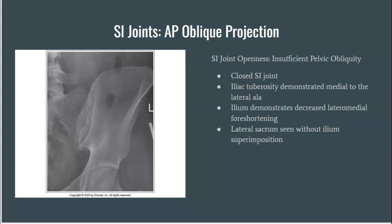The iliac tuberosity will be demonstrated medial to the lateral wing. The ilium will demonstrate decreased lateral-medial foreshortening, and the lateral sacrum will be seen without ilium superimposition. When looking at this image, the SI joint is definitely closed and there is some foreshortening, so keep this in mind as we get to our practice analysis.